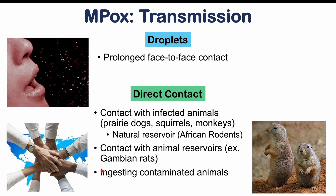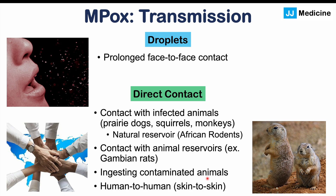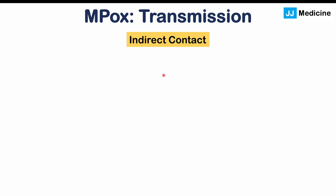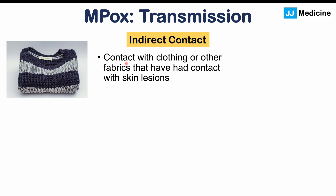Another route of direct contact is through ingestion of contaminated animal products. What has been driving the most recent outbreak from May 2022 is human-to-human spread via skin-to-skin contact, with the majority of cases occurring through sexual transmission. Indirect contact — such as contact with clothing or fabrics that have touched skin lesions or bodily fluids, or fomites like furniture contaminated with lesion fluid — can also facilitate transmission.